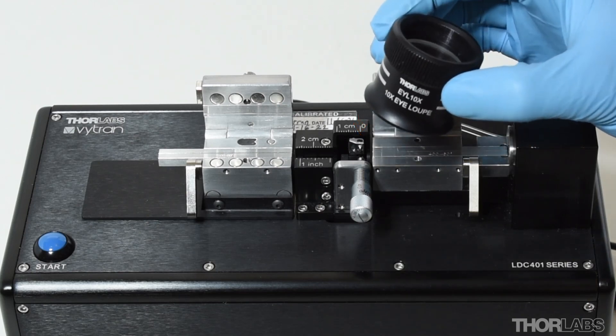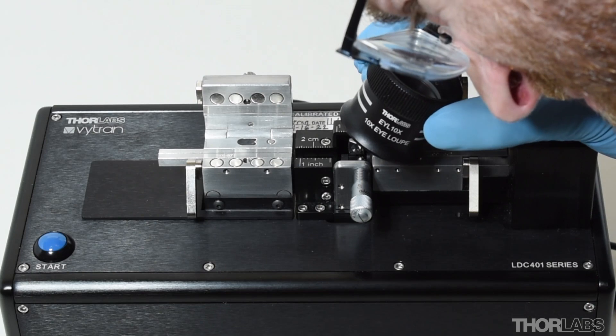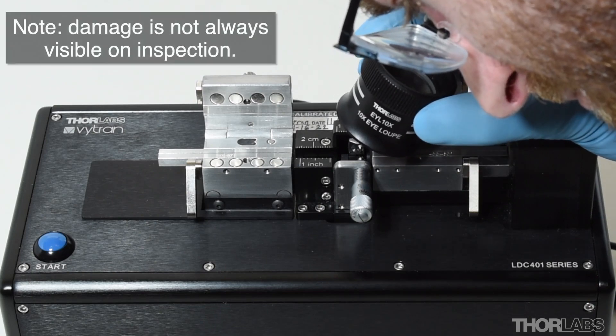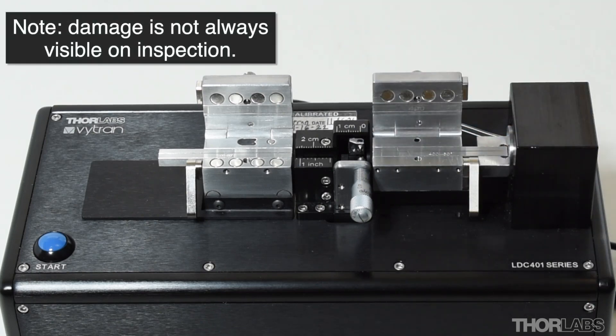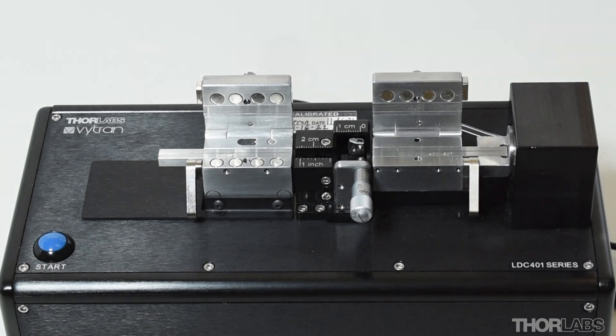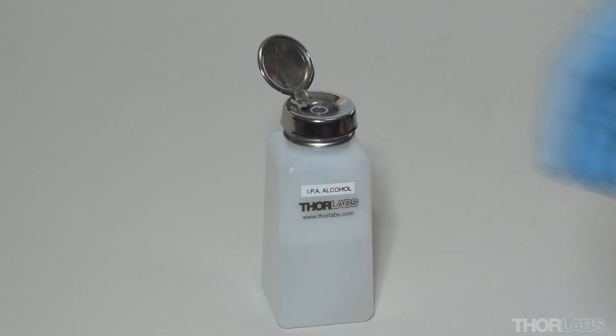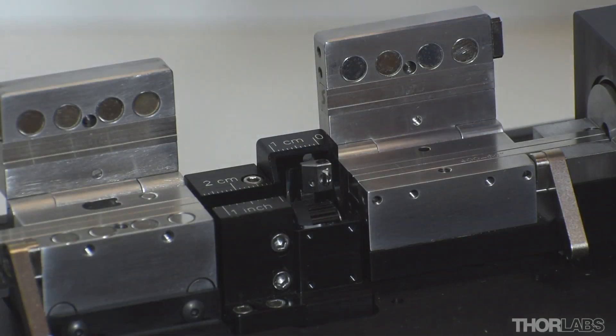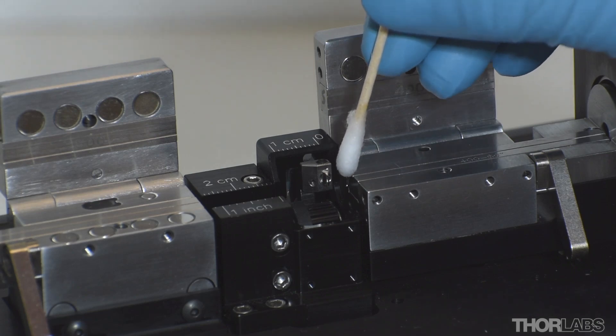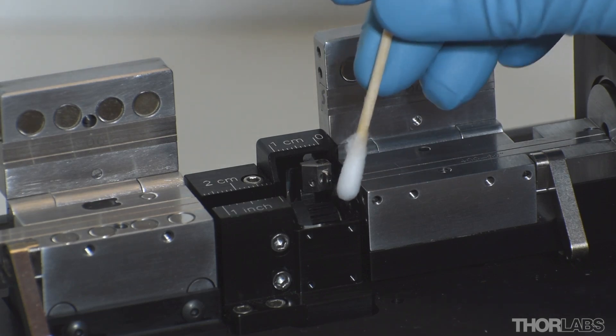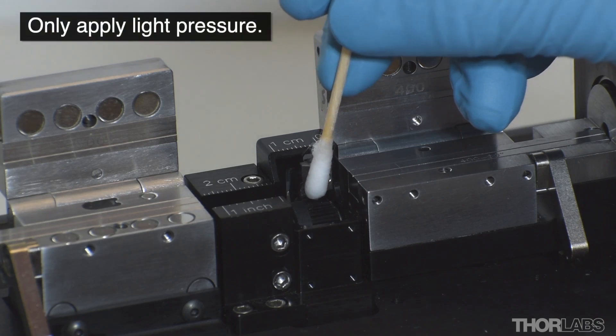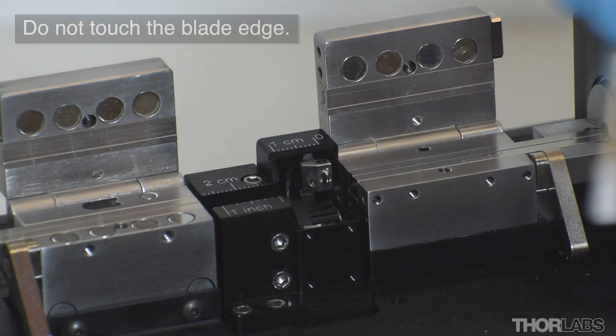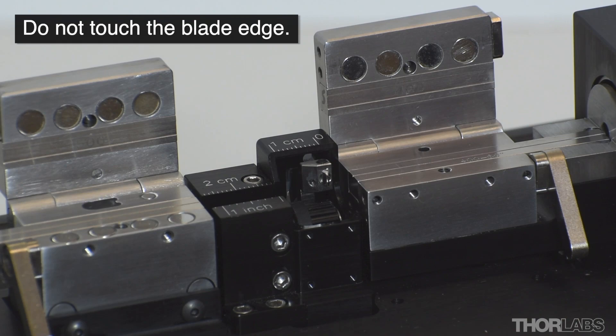Use the eye loupe to inspect the blade for damage. However, it should be noted that even if the blade edge is dull or damaged, it may not be possible to see this. If there are no obvious signs of damage, clean the blade using a cotton-tipped applicator soaked in acetone or IPA. Wipe both sides of the blade, moving the applicator from the back towards the front. Never across the blade edge. Only apply light pressure and do not touch the front edge of the blade using hard metal objects.